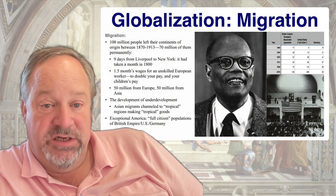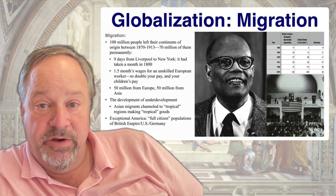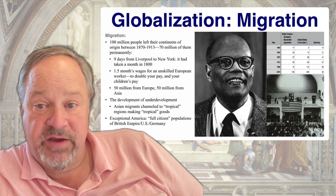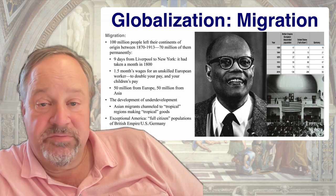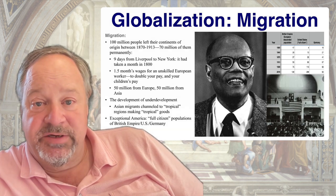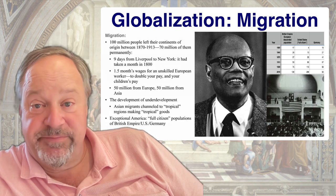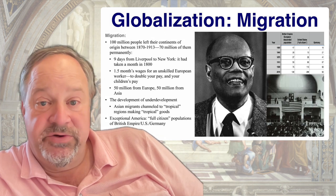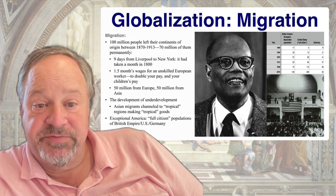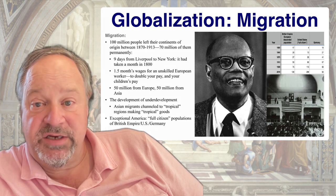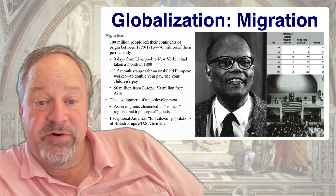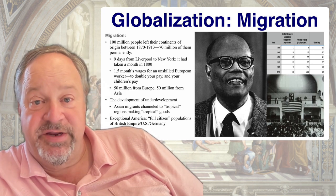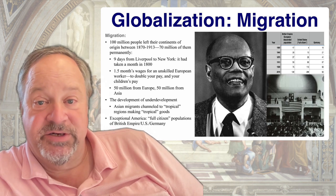Of key importance in dividing the world after 1870 between a global north and a global south was international migration. Nobel Prize-winning economist W. Arthur Lewis of Princeton — teaching at Princeton from Santa Lucia — taught me that a hundred million people left their continents of origin between 1870 and 1913: 70 million of them permanently, 30 million of them to return — some with success in the form of money, some with failure — back to their original locations.